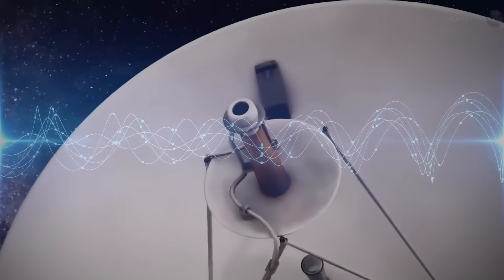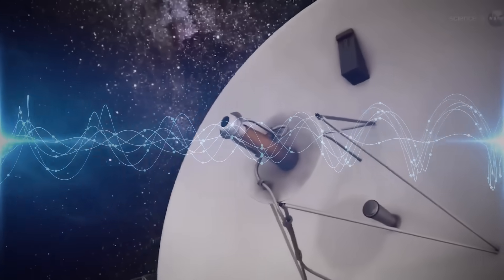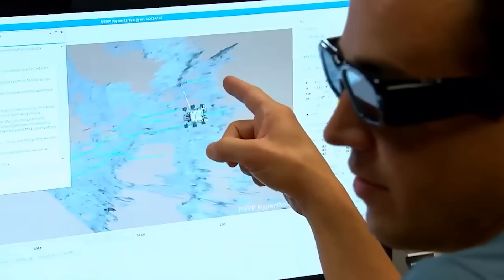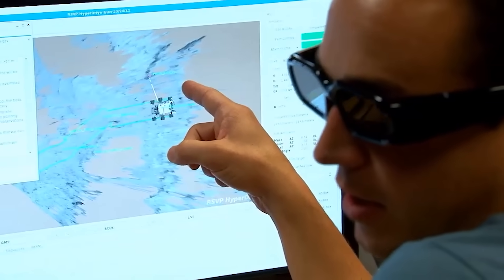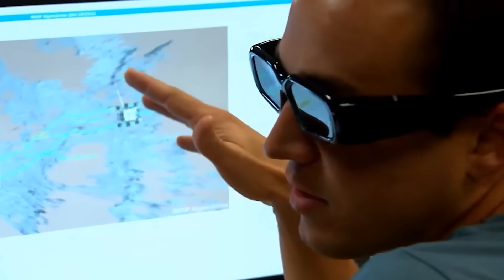And the most baffling part? The signal wasn't coming from inside the probe. Triangulation data confirmed its origin was external, somewhere nearby in the void.